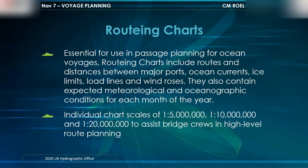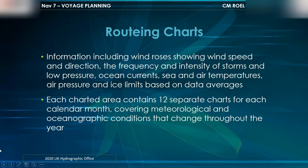Individual chart scales of 1:5 million, 1:10 million, and 1:20 million assist bridge crews in high-level route planning. Information includes wind roses showing wind speed and direction, the frequency and intensity of storms and low pressure, ocean currents, sea and air temperatures, air pressure, and ice limits based on data averages.